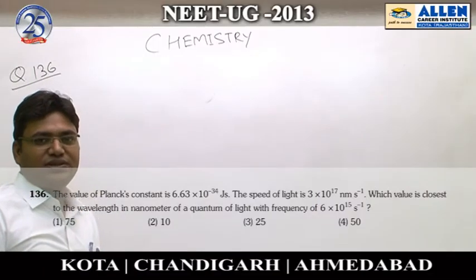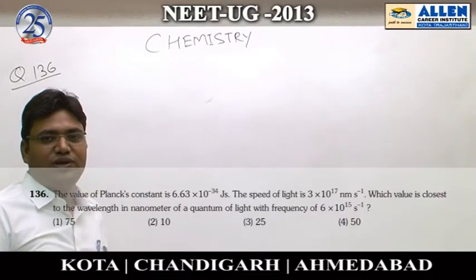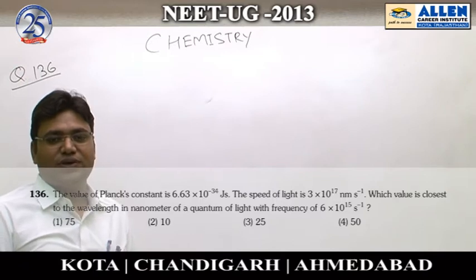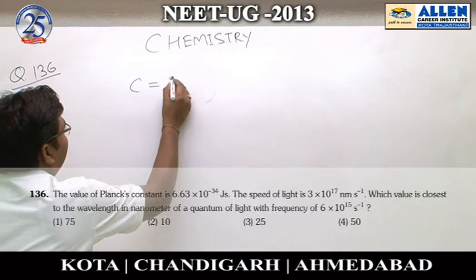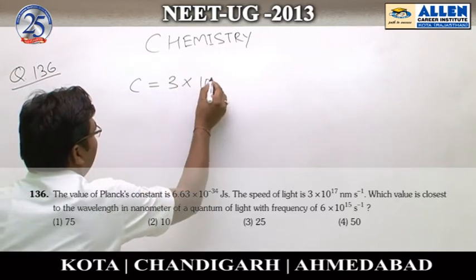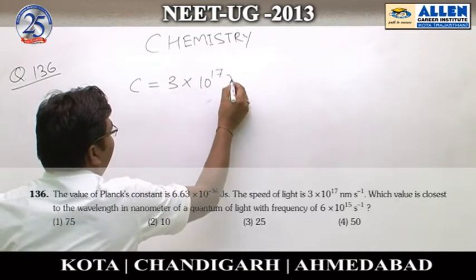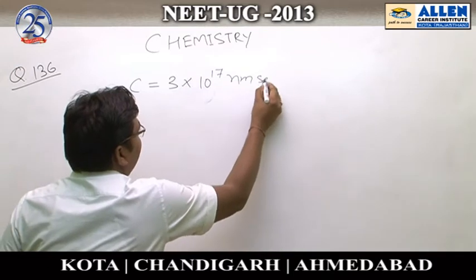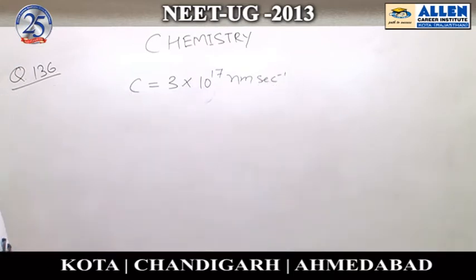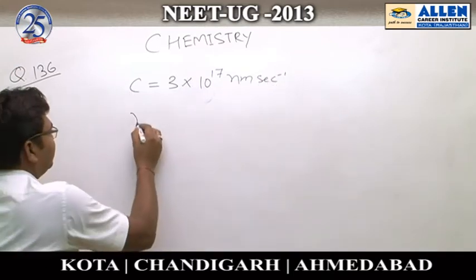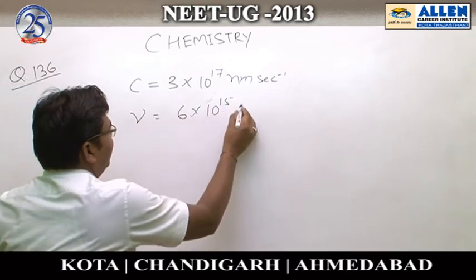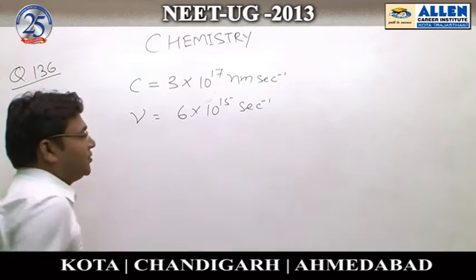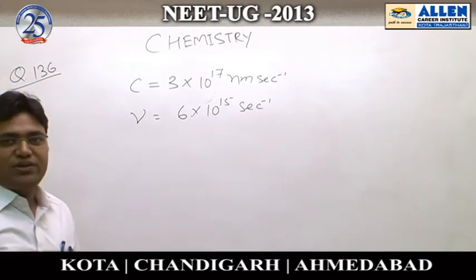Question number 136: the speed of light is given as 3×10¹⁷ nanometers per second and the frequency is 6×10¹⁵ per second. We want to calculate the wavelength of light.